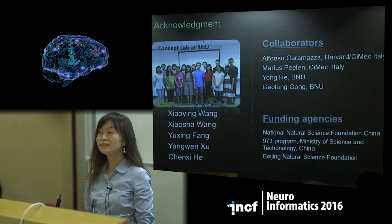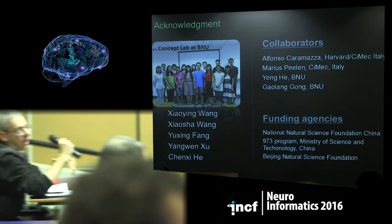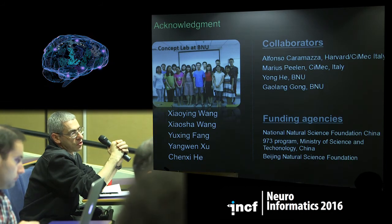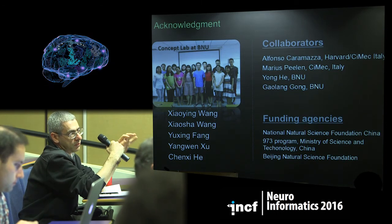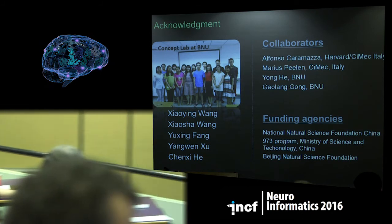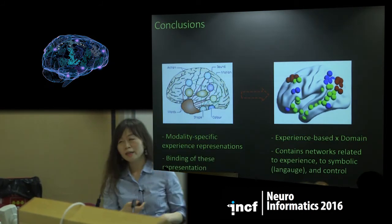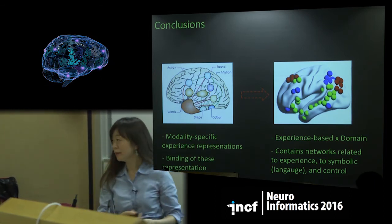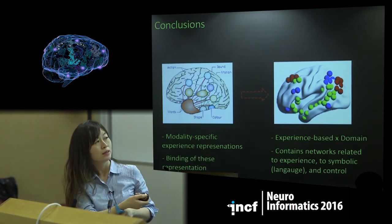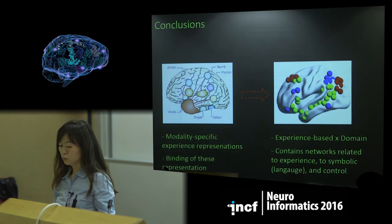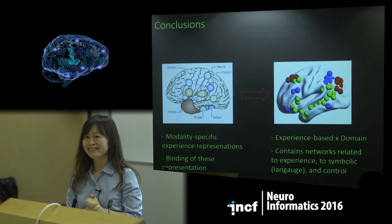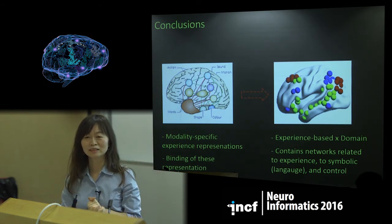Question from audience about the word2vec analysis: is the speaker arguing that the green network is the symbolic network? Response: It really depends on how we define semantics. If we think about the brain semantic network, this whole thing is the brain semantic network — the green module is part of it, just a different format. So one network is more experiential, one more symbolic, and the third is a control mechanism.